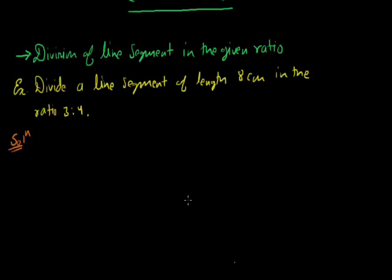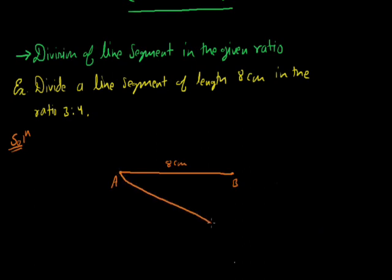First of all, we will make a line segment with length 8 cm. With point A, using a protractor, we will make an acute angle at point A. At point A we are making an acute angle — to divide AB in the ratio.